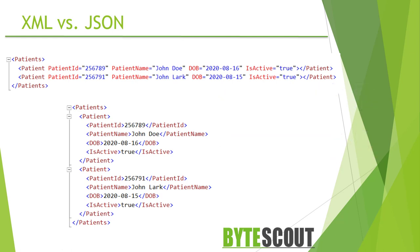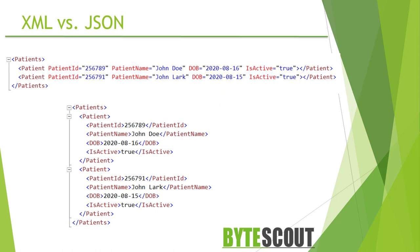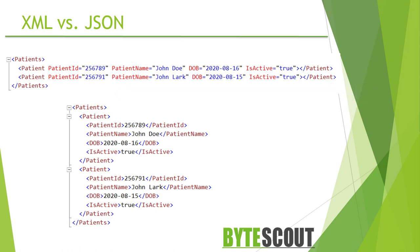The most significant advantage that JSON has over XML is that JSON is a subset of JavaScript, so code to parse and package it fits very naturally into JavaScript code. Another difference is that XML tag names cannot contain certain characters, and they also cannot contain a space character, whereas JSON keys or names can contain these characters.